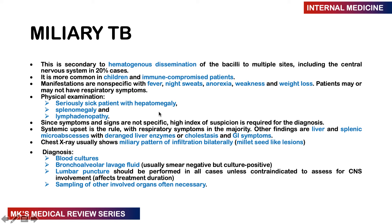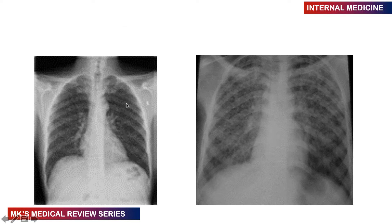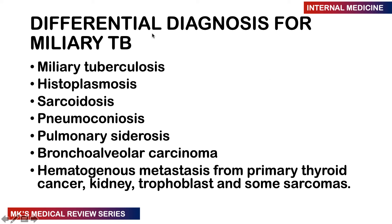On chest X-ray you see millet-seed-like lesions bilaterally. Diagnosis is through blood cultures, bronchoalveolar lavage (usually smear-negative but culture-positive), and lumbar puncture if CNS involvement is suspected. The differential diagnosis for a miliary picture includes miliary TB, histoplasmosis, sarcoidosis, pneumoconiosis, pulmonary siderosis, bronchioloalveolar carcinoma, hematogenous spread of thyroid cancers, renal cancers, trophoblastic cancers, and sarcomas.